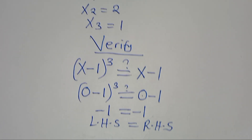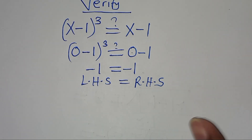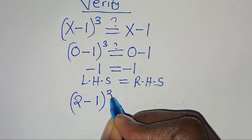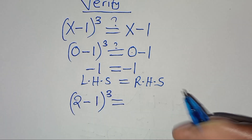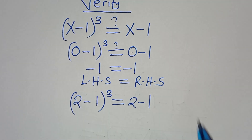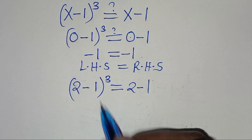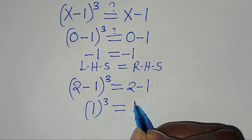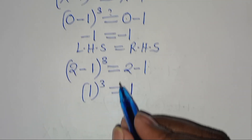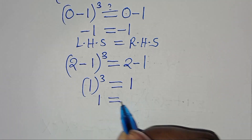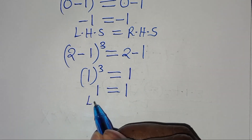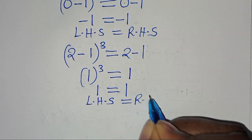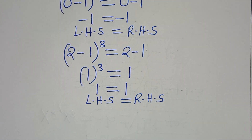Now, let's check x2 — x2 is equal to 2. So, we have 2 minus 1 to the power of 3, this is equal to 2 minus 1, which is 1. 1 to the power of 3 is 1, which is equal to 1. So, this implies that the left-hand side is equal to the right-hand side.